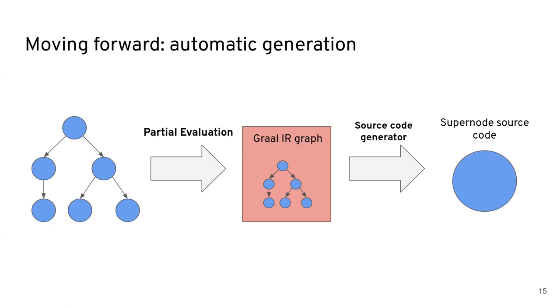And then through this Graal's intermediate representation graph, that should be easier to turn into super node source code through a super node source code generator that we will write. So through this, hopefully the partial evaluation system will alleviate some of the burden from having to implement that, but we would still have to write a source code generator.